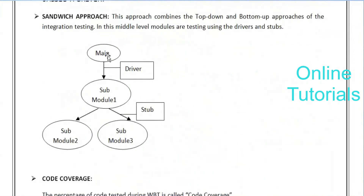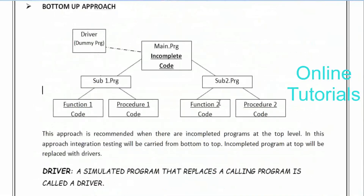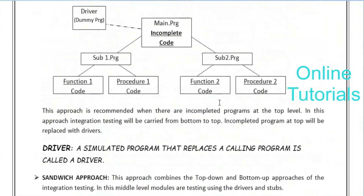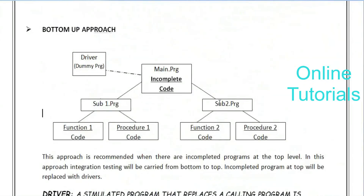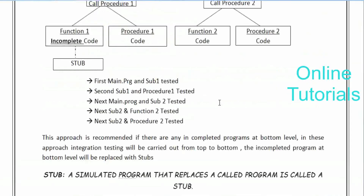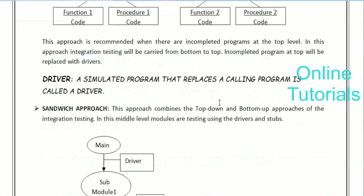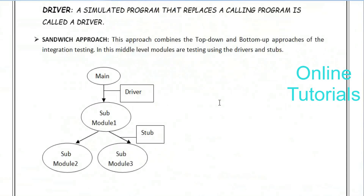Next is the sandwich approach. In the sandwich approach, both drivers and stubs may be used - it is a combination. In bottom-up approach, we use only drivers. In top-down approach, we use only stubs. In the sandwich approach, depending on the situation, we call the appropriate simulated programs. This approach combines the top-down and bottom-up approaches - the combination of top-down and bottom-up is called the sandwich approach.